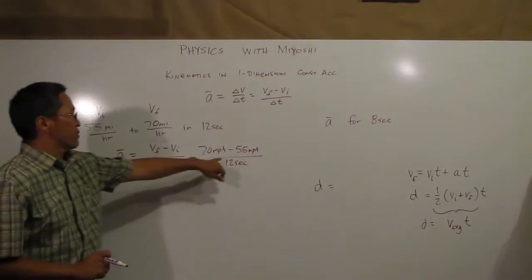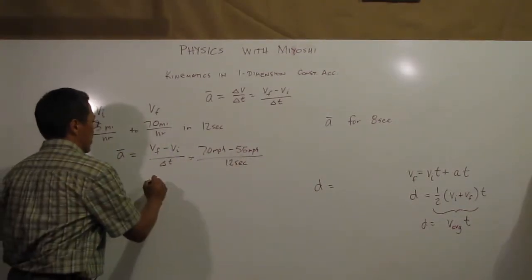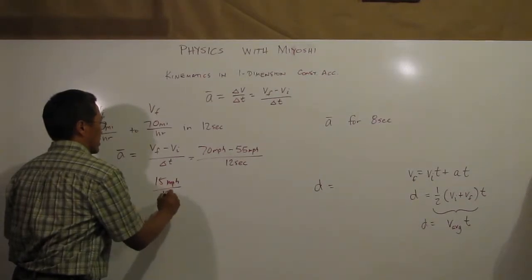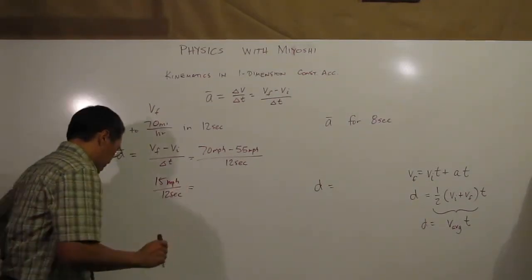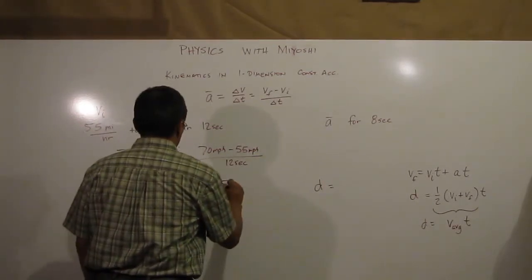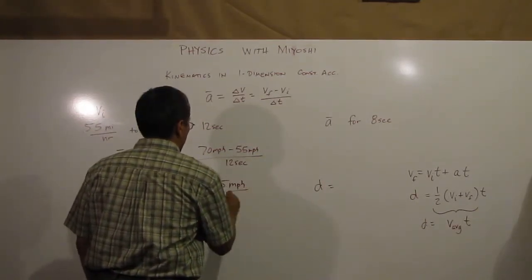If I do that, 70 minus 55 is 15, so 15 miles per hour in 12 seconds. That gives me 1.25 miles per hour per second.